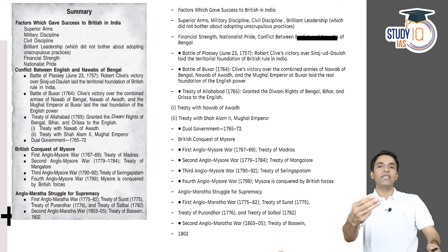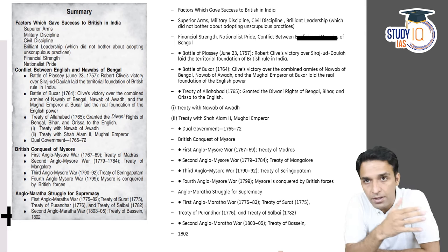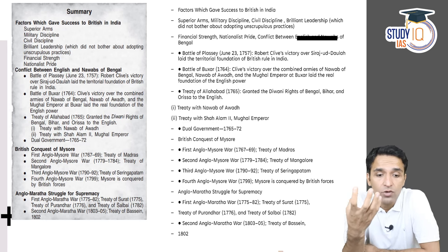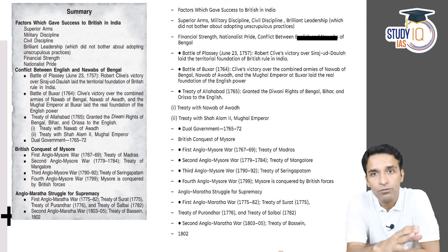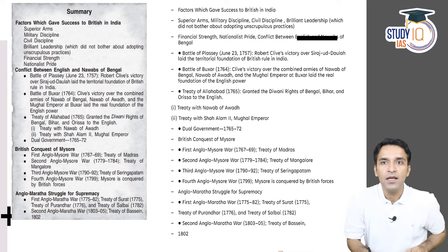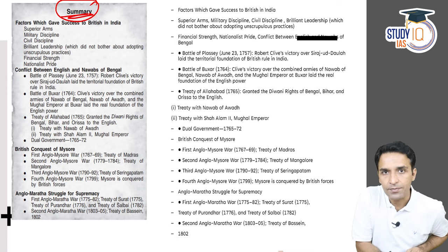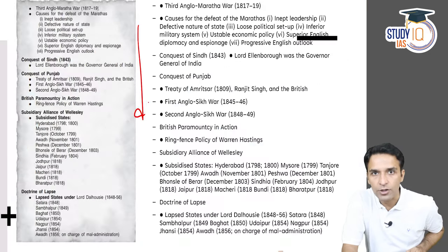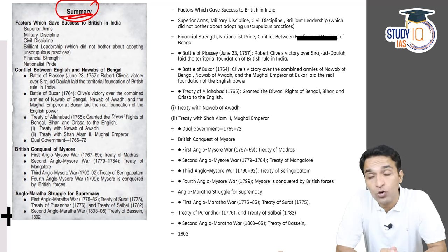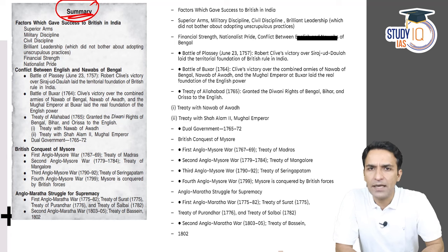These are the three administrative policies Britishers followed to expand and consolidate their rule. When you open the Spectrum book, there is a summary at the end of every chapter. My instruction is: if you memorize that summary — rote-learn the summary of every chapter in Spectrum — 50% of Modern History is done. Believe me, it's not an exaggeration. You will be able to solve a large number of questions solely based on that.